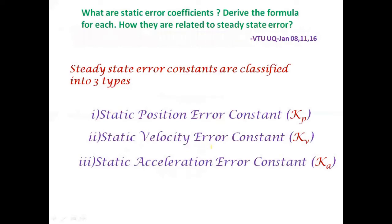Moving on to static error coefficients. Steady state error analysis can be performed using static error constants and dynamic error constants. Static error constants do not give information about variation of steady state error with respect to time; that requires dynamic error constants. Static error constants apply only to step, ramp, and parabolic signals: (1) static position error constant Kp for step input, (2) static velocity error constant Kv for ramp input, (3) static acceleration error constant Ka for parabolic input.